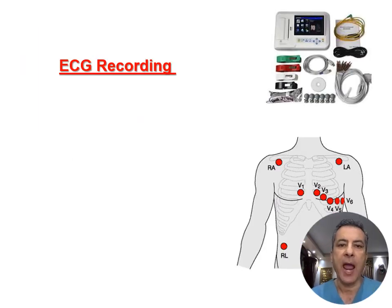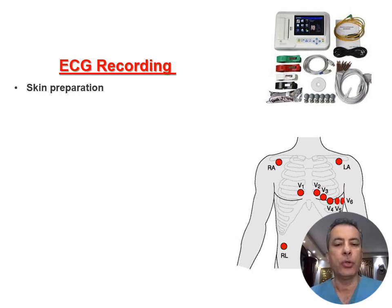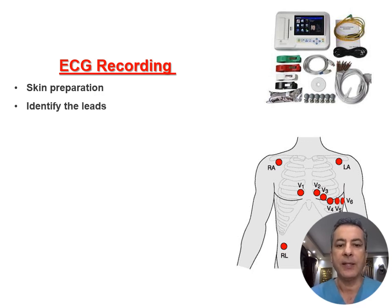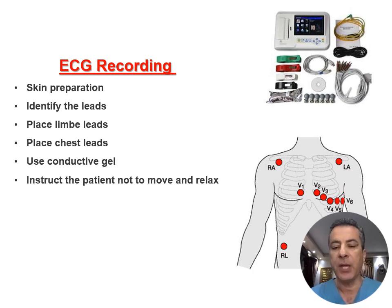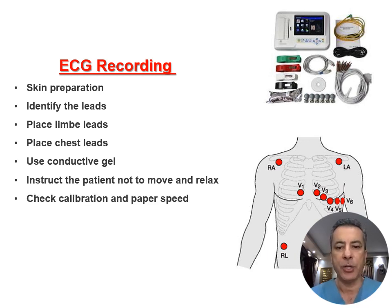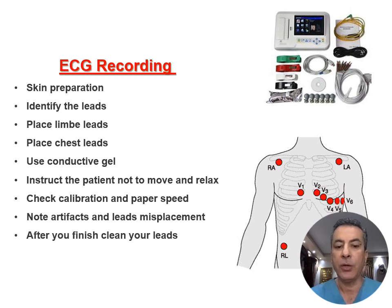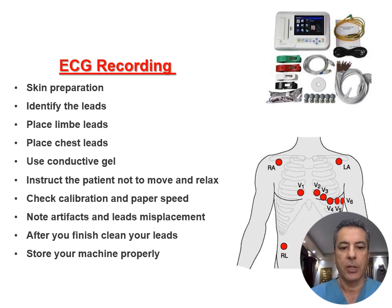To have a clean, accurate ECG recording, you should take care of your ECG recorder and follow certain steps. First, perform good skin preparation to reduce skin resistance. Then identify the leads, place limb leads and chest leads, and use conductive gel. Instruct the patient not to move and to relax. Check calibration and paper speed, note artifacts and lead misplacements. After finishing, clean your leads — this is very important because dry gel is an insulator — then store your machine properly, taking care not to tangle the wires.